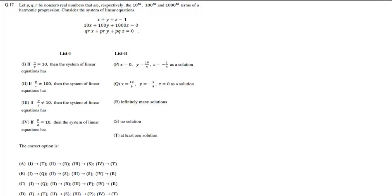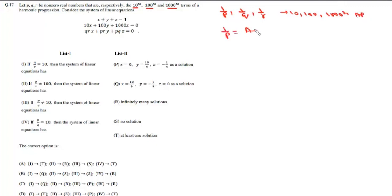In question number 17, P, Q, R are non-zero real numbers that are respectively the 10th, 100th, and 1000th terms of an HP. So 1/P, 1/Q, and 1/R are the 10th, 100th, and 1000th terms of an AP. We write 1/P as A + 9d, 1/Q as A + 99d, and 1/R as A + 999d.